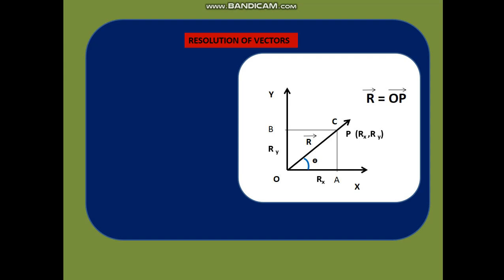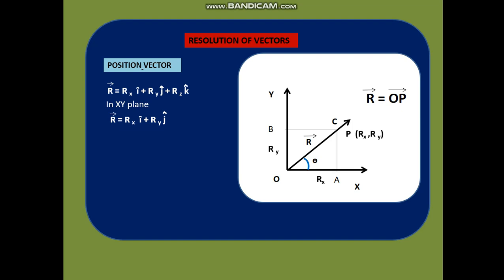The small angle theta is the angle of R vector with respect to the X axis. The position vector is R vector = Rx i-cap + Ry j-cap + Rz k-cap, where i-cap, j-cap, and k-cap are unit vectors along X, Y, and Z. In the X-Y plane: R vector = Rx i-cap + Ry j-cap = R cosθ i-cap + R sinθ j-cap, since Rx = R cosθ and Ry = R sinθ by trigonometry.